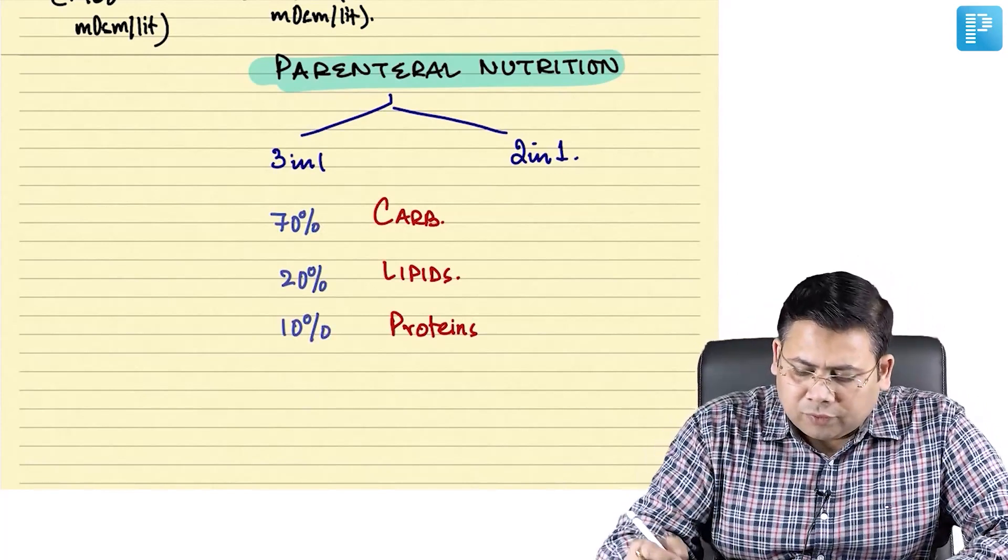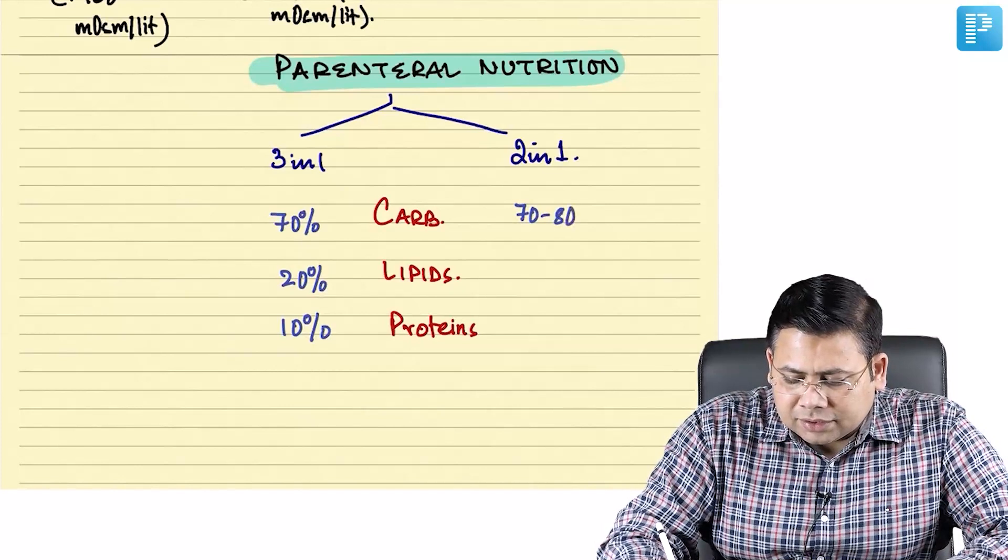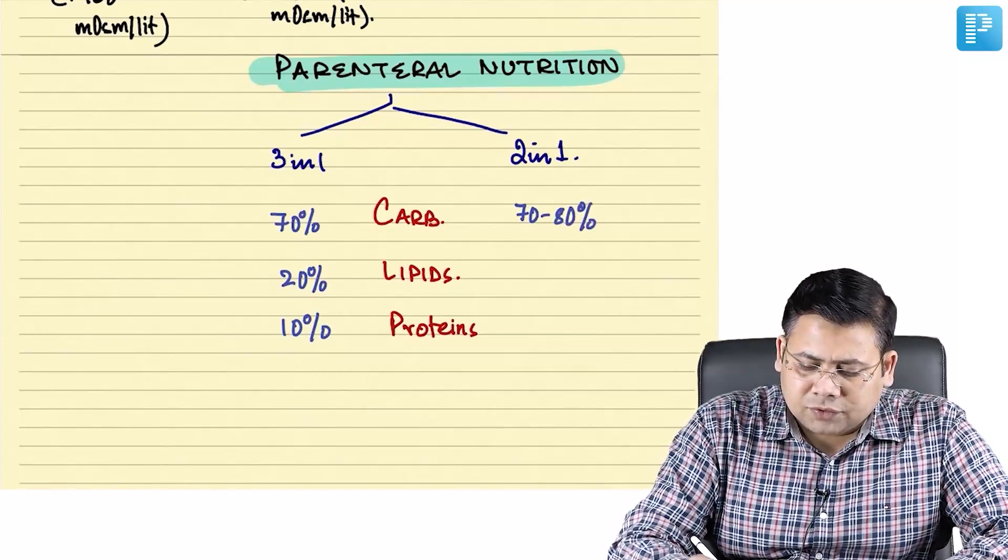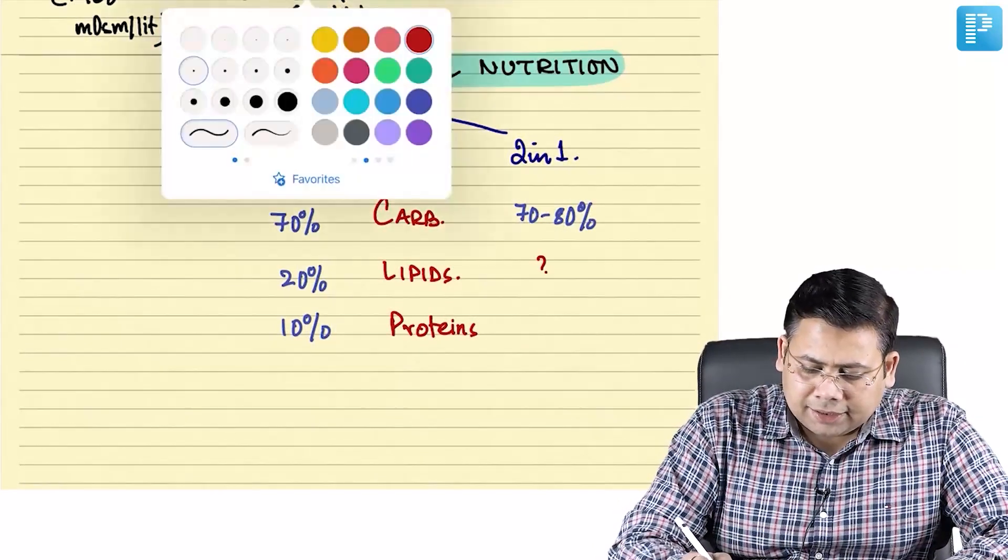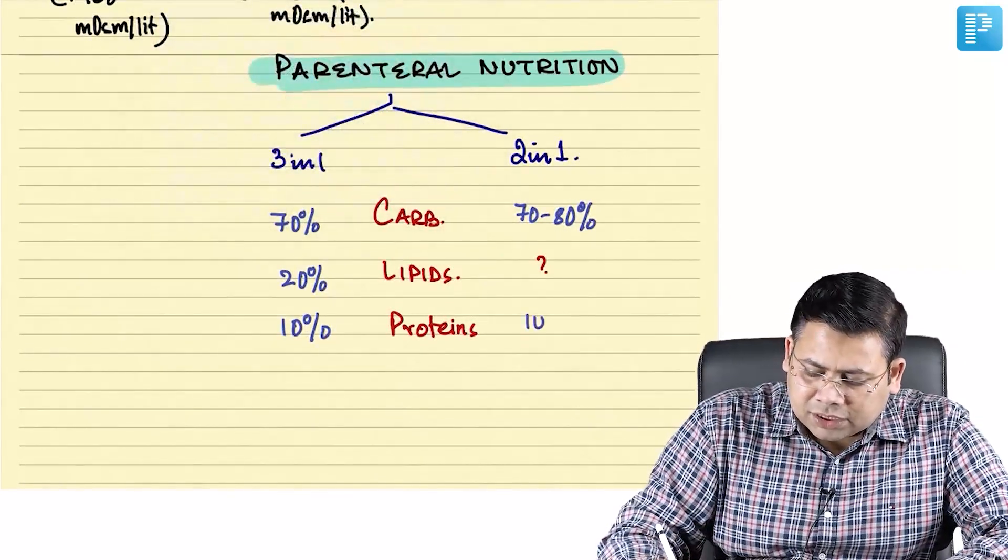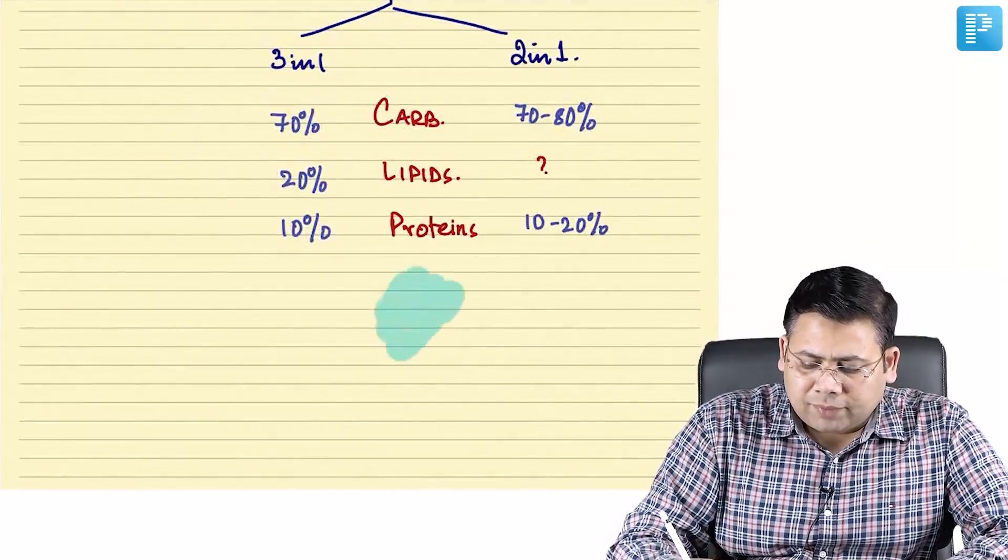If you talk about two in one, the carb is 70 to 80%. This is a type where actually the lipids are not available, and protein is 10 to 20%.